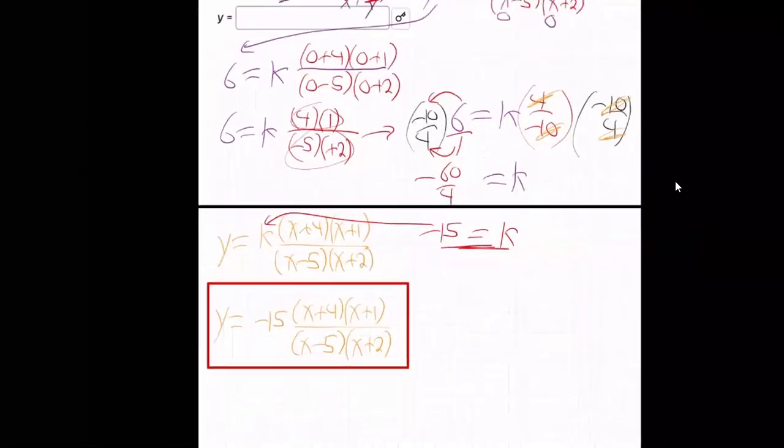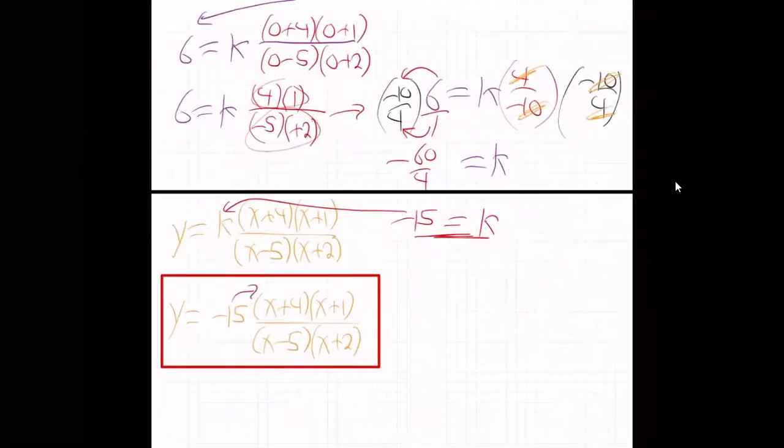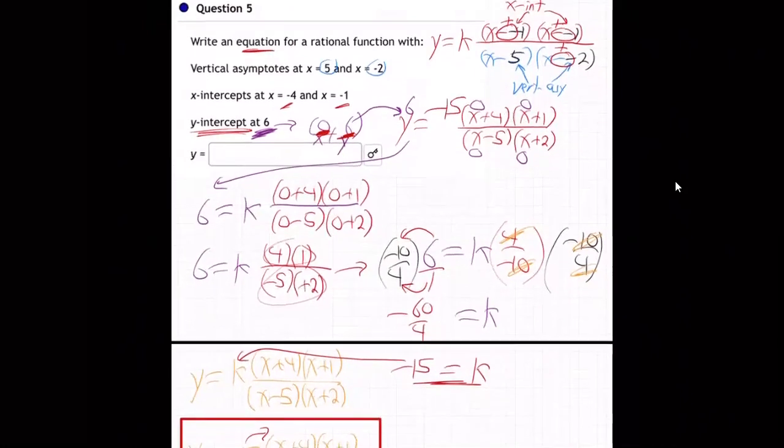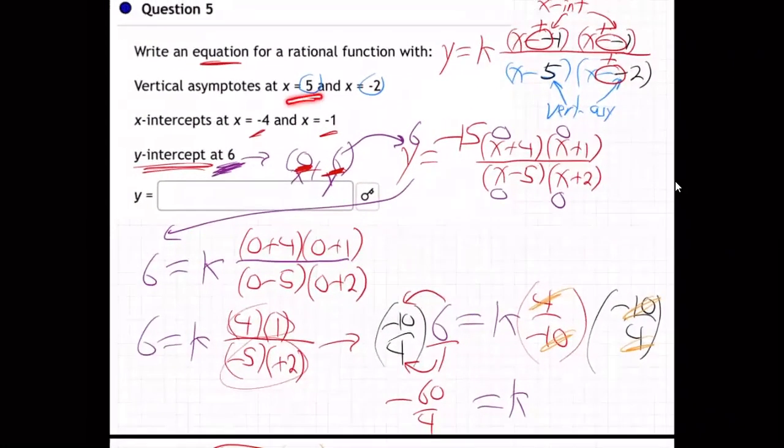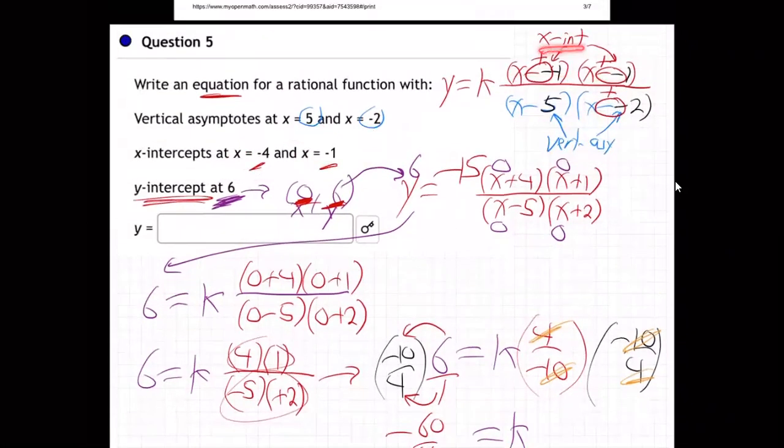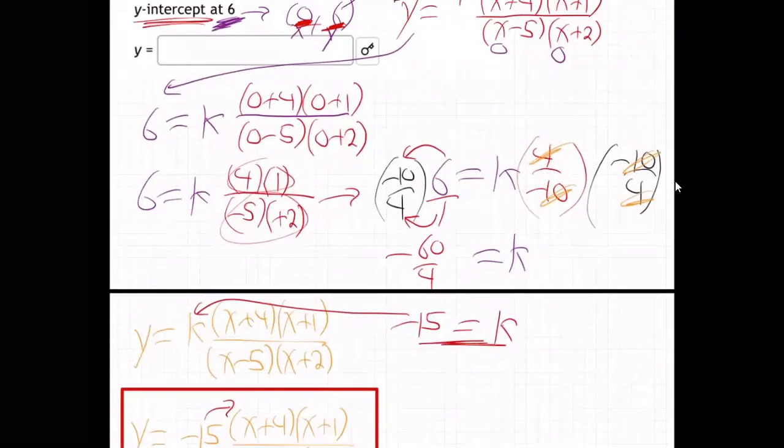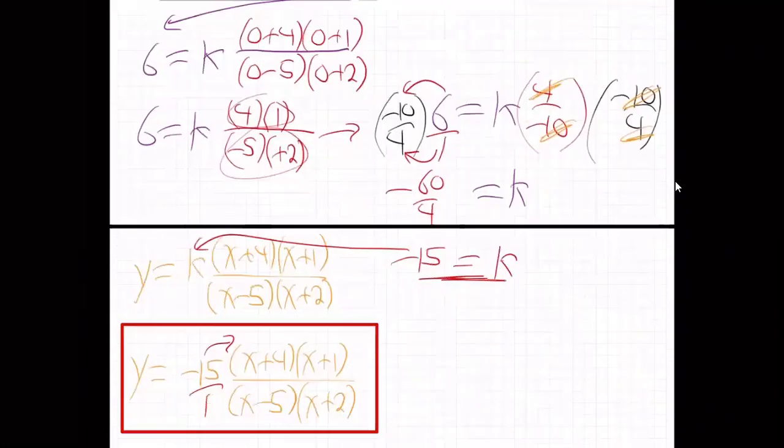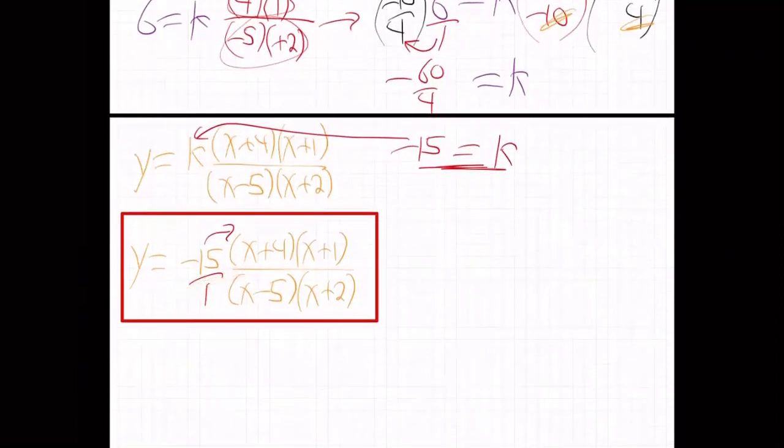So recapping, how did we do that? And by the way, that minus 15, you can put it on the top or just in the front. It's all the same thing because in the front is over 1. So it's the same thing as being in the top. So again, what did we do? We took the vertical asymptotes and put them behind an x minus in the denominator. And we took the x-intercepts and put them behind an x minus in the numerator and then put a k in the front. And then we took the y-intercept to find k. We took the y-intercept, plugged it in. That's 0, 6, because it says the y is 6. 0, 6. Plugged in 0 for x, 6 for y. Worked it out. Solved for k by multiplying by the reciprocal, the upside down, so these canceled out. K is minus 15. Put the k back in the front. There it is.